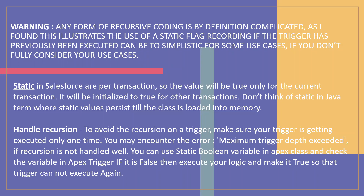A warning: any form of recursive coding is by definition complicated. Using a static flag to record if the trigger has previously been executed can be too simplistic for some use cases. If you don't fully consider your use cases — static means in Salesforce are per transaction, so the value will be true only for the current transaction. It will be re-initialized for other transactions. Don't think of static in Java terms where static values persist until the class is loaded into memory.